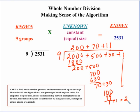So, we have 2 ninths of a group of 9. So, we have 281 and 2 ninths.